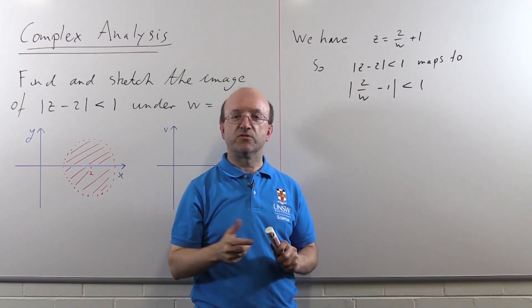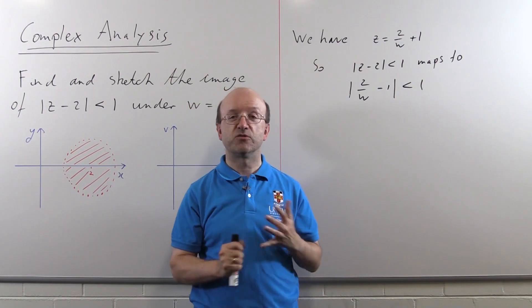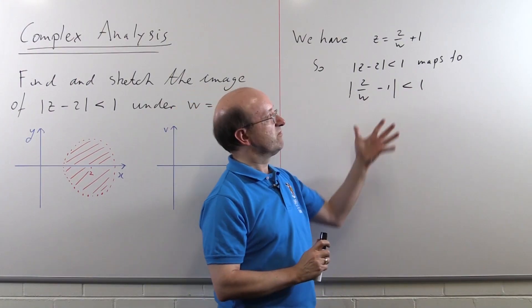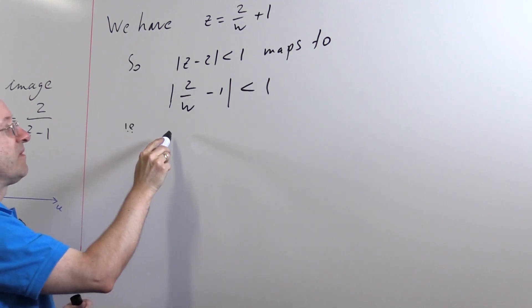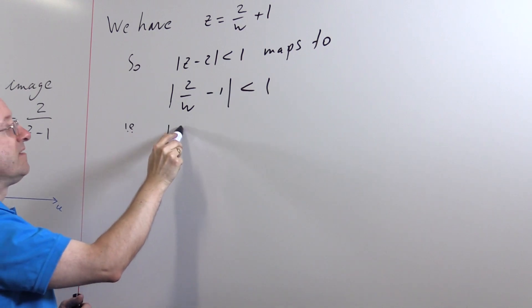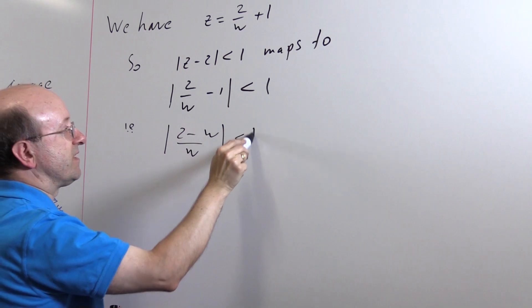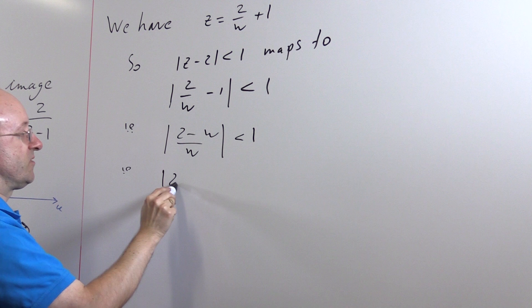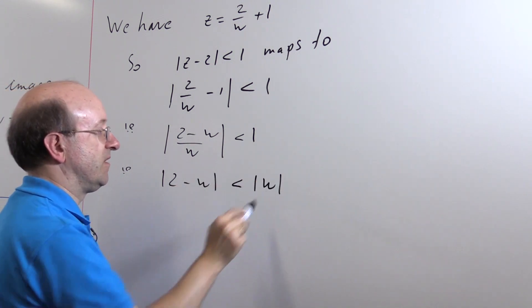So |z - 2| < 1 maps to |2/w + 1 - 2| < 1, which is |2/w - 1| < 1. And then what we do is we rearrange this into something we can actually make sense of. Well, putting everything over a common denominator, |(2 - w)/w| < 1. But that is the same thing as |2 - w| < |w|.